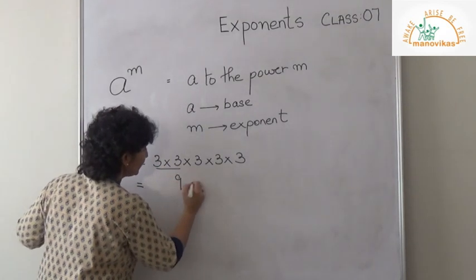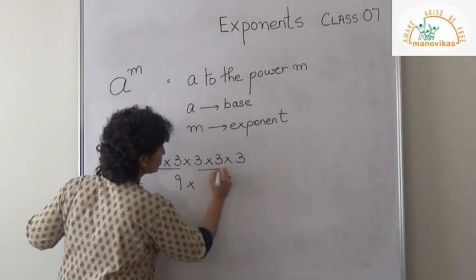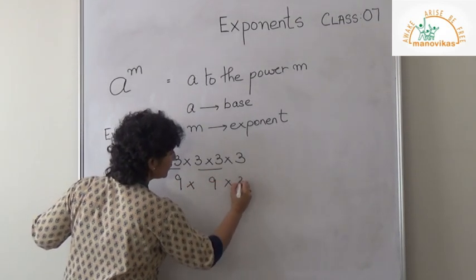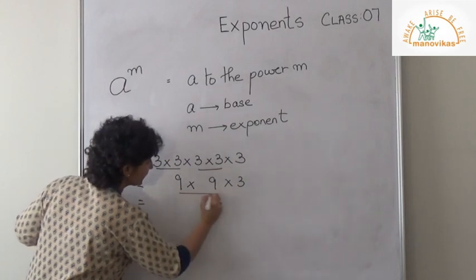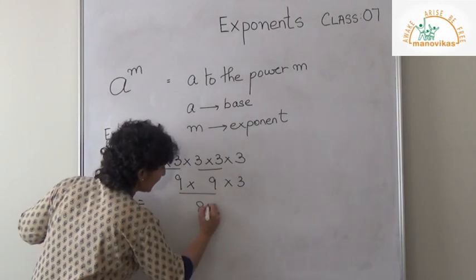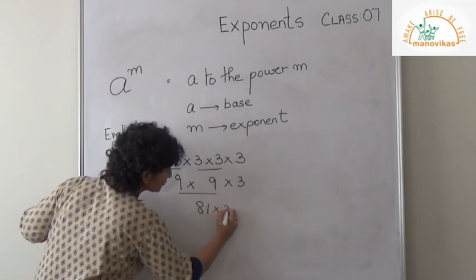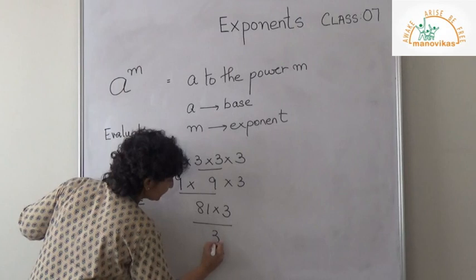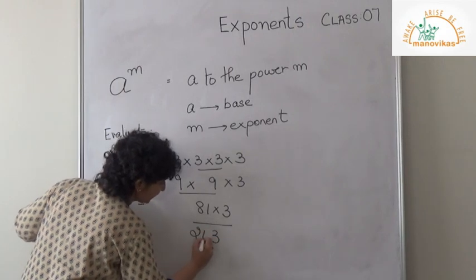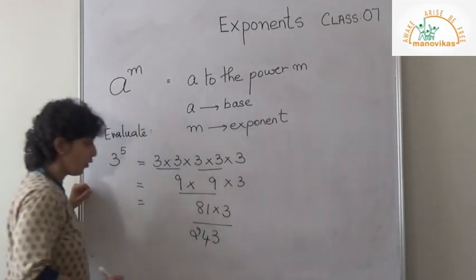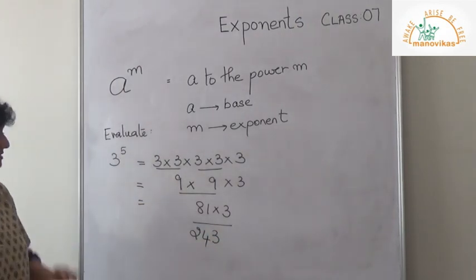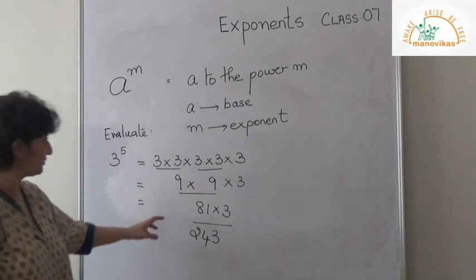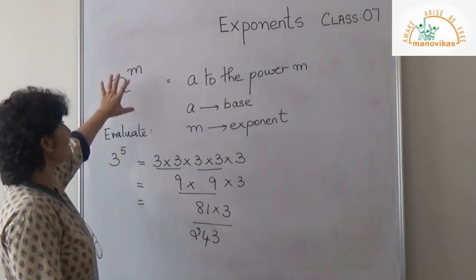So 3 threes are 9, into 3 — that gives me 9 nines are 81, into 3. My answer will be 243.